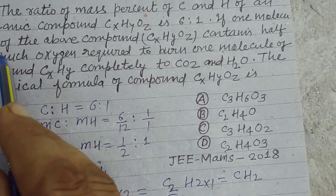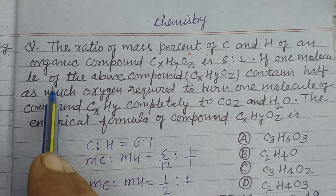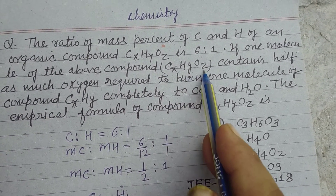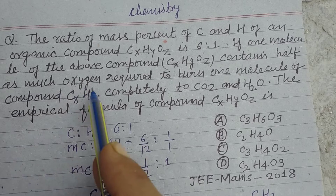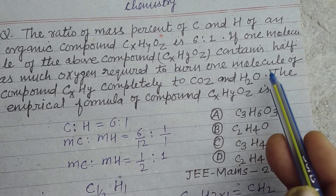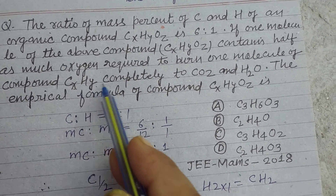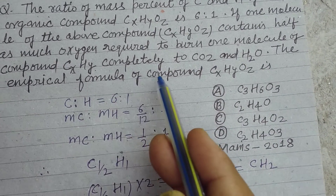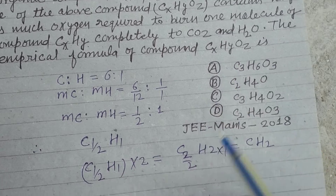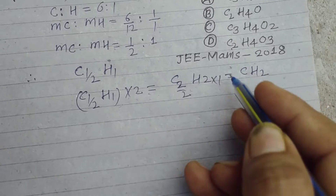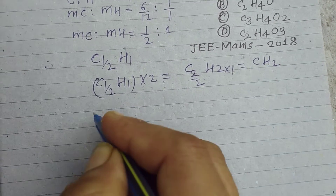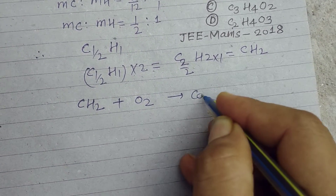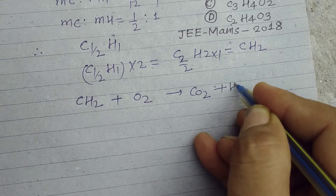If one molecule of the above compound CxHyOz contains half the oxygen required to burn one molecule of compound CxHy completely to CO2 and H2O, find the empirical formula of CxHyOz. So the combustion of CH2 is: CH2 + O2 → CO2 + H2O.